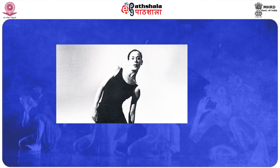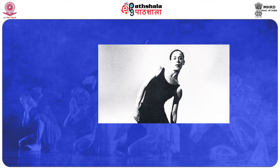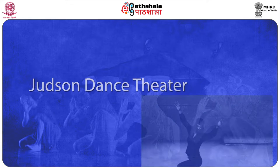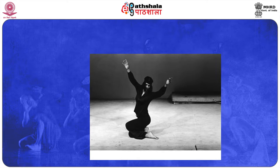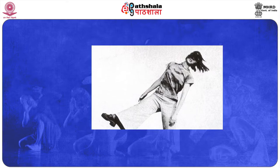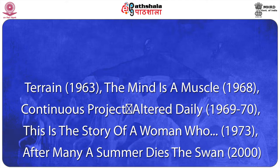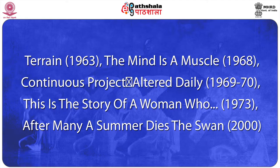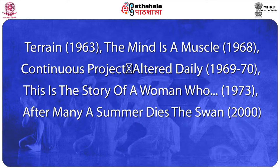Yvonne Rainer began training as a modern dancer in New York in 1957 and began to choreograph her own work in 1960. She was one of the founders of the Judson Dance Theater in 1962, the genesis of a movement that proved to be a vital force in modern dance in the following decades. Rainer pioneered the use of improvisations based on ordinary non-dance movements ranging from acrobatics to military marching to sports and games. Some of her better known dances and theater pieces are Terrain, The Mind Is a Muscle, Continuous Project Altered Daily, and This Is the Story of a Woman Who, after Many a Summer Dies the Swan, which was commissioned by the Baryshnikov Dance Foundation.